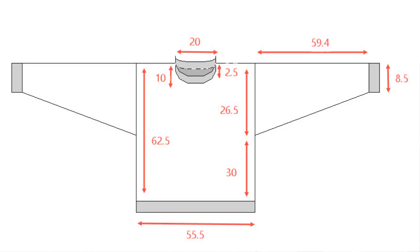Welcome to the Design In It 9 video learning series. In this tutorial, we'll be working in original pattern drafting, entering in a new garment from a diagram that we measured off of an existing sweater. I laid this on my dining room table and used a measuring tape and wrote down this set of measurements for a sweater that I would like to create in Design In It.